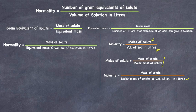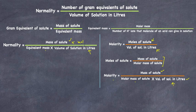Now let's compare normality with molarity. Both have mass of solute in the numerator and volume of solution in the denominator. The difference is that normality has equivalent mass while molarity has molar mass. If we multiply and divide molarity by molar mass of solute, we can relate the two expressions to get normality.